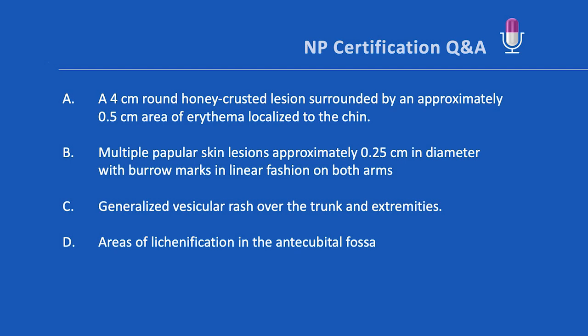C: a generalized vesicular rash over the trunk and extremities. D: areas of lichenification in the antecubital fossa.